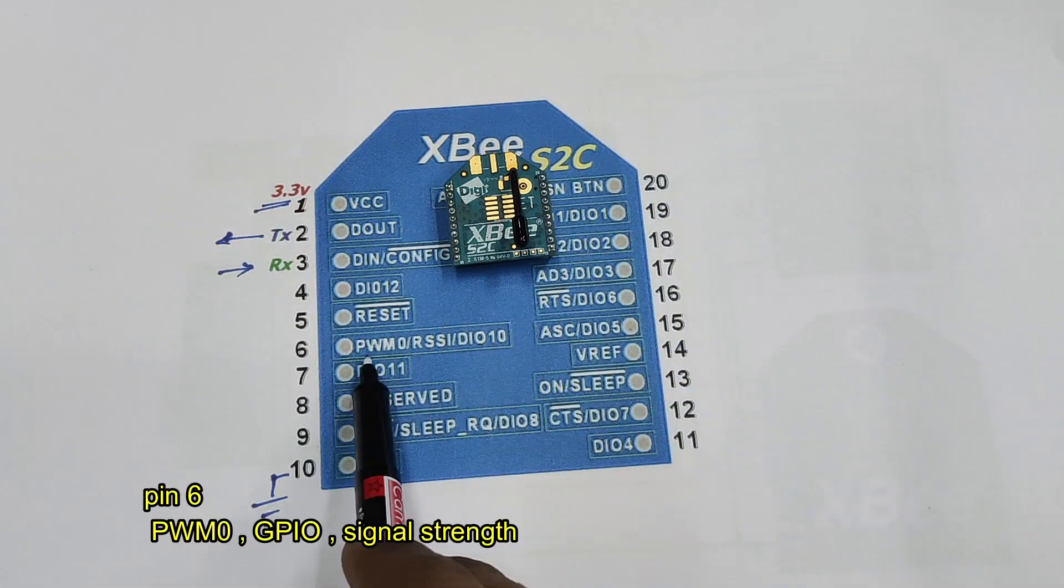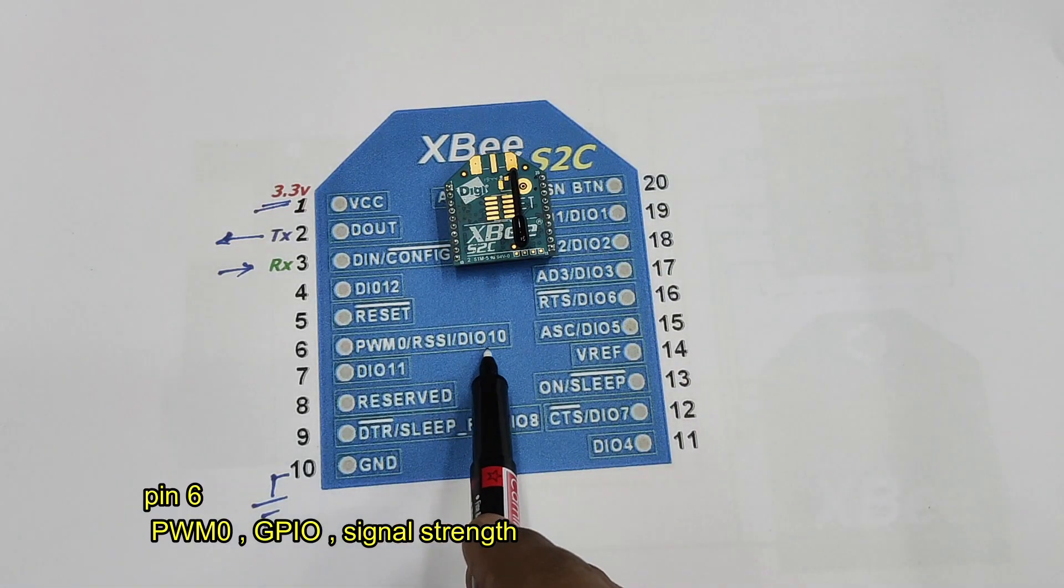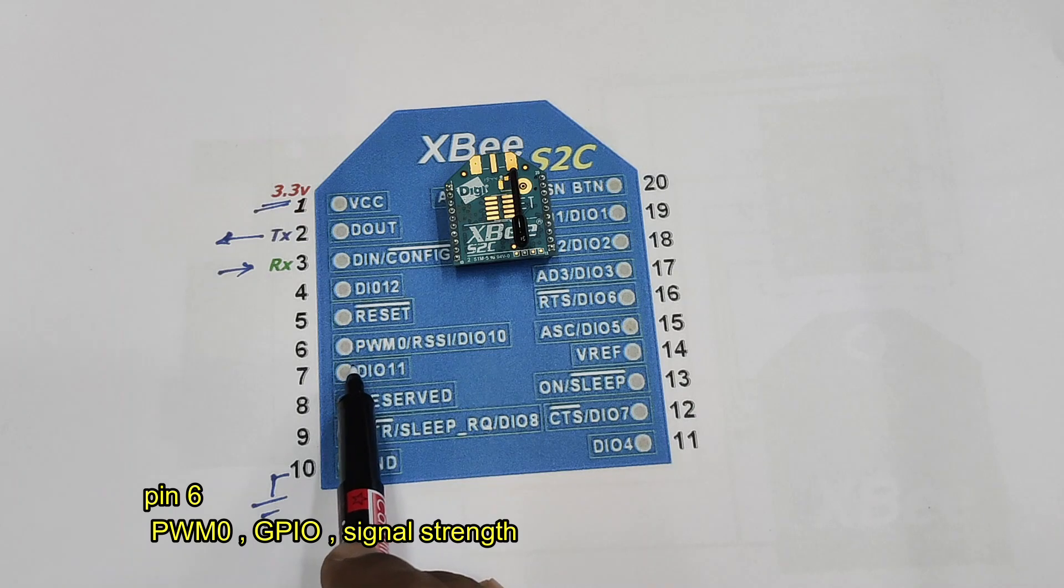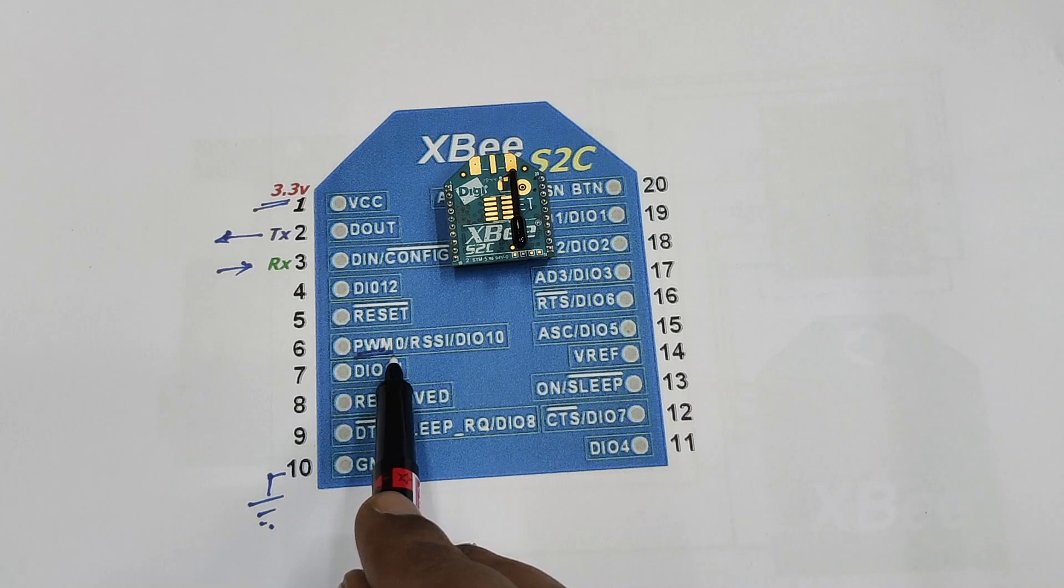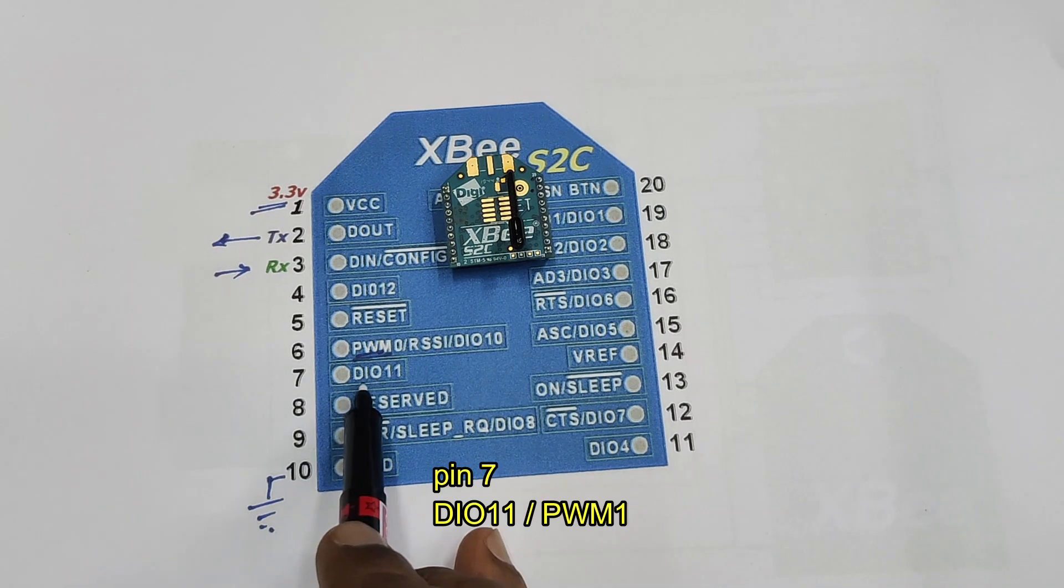Pin 6 has got three functions: IO 10, signal level RSSI indication and PWM 0 which is analog out 1. Pin 7 is IO 11 and also PWM 1.